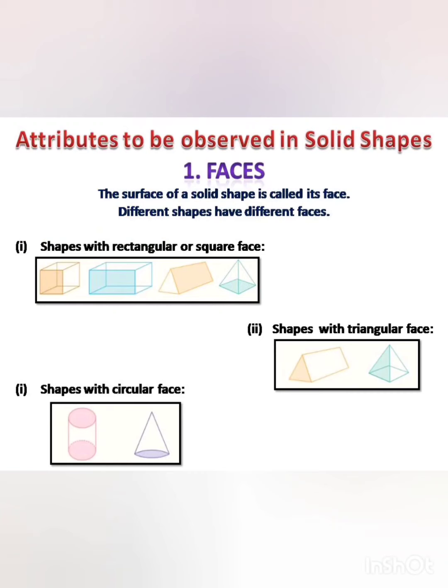First of all, let us learn about the attributes that are to be observed while looking at solid shapes. The first one is faces. The surface of a solid shape is called its face. Different shapes have different faces.